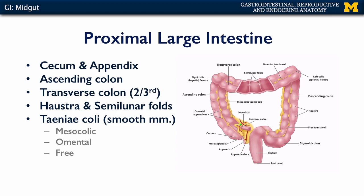The cecum is contiguous with the ascending colon, which is secondarily retroperitoneal — behind the peritoneal space. The ascending colon is contiguous with the transverse colon, and we go about two-thirds of the way along the transverse colon before we reach the end of the midgut and the start of the hindgut.